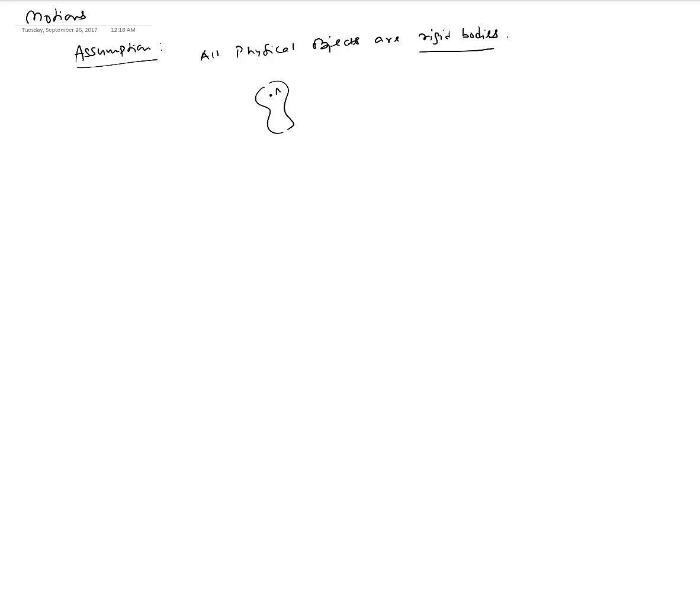So here is my one physical object. Let's say this is point A, this is point B. Then after a while the object moves like this, so the distance between these two points A and B does not change and that's what we mean by rigid bodies essentially.